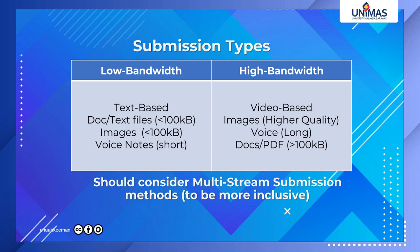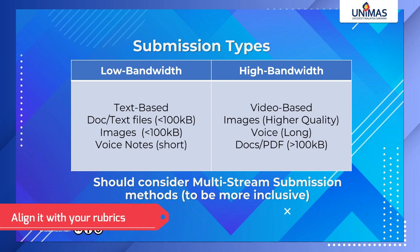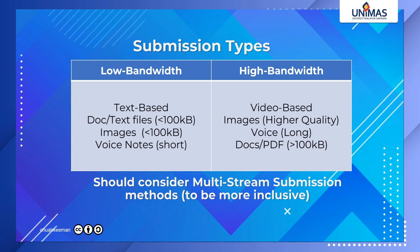You can be upfront: tell the students with better internet that they have to do slightly additional things, while the other group — handicapped in terms of connection — will do largely text-based. This is multi-stream submission. After all, if you design your assessment well, what you should be measuring is the content they produce rather than the format or media. You can't give more marks just because one group produced images if the content isn't good — it depends on your rubric.